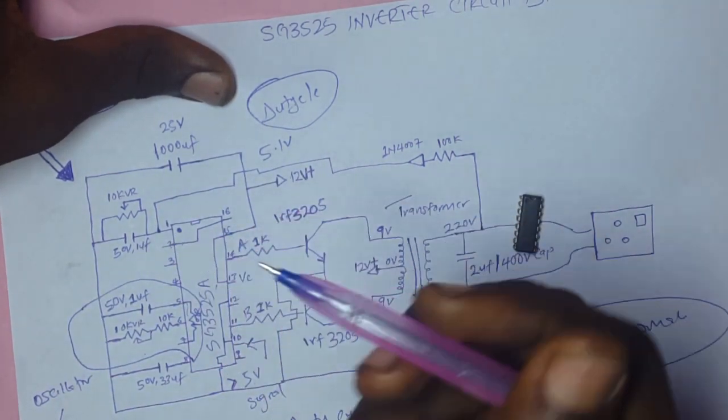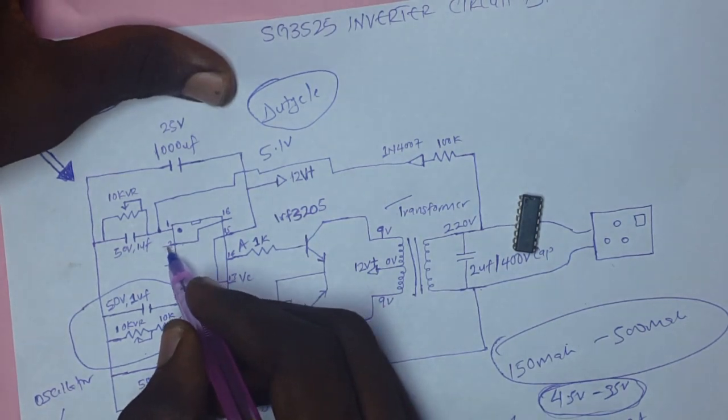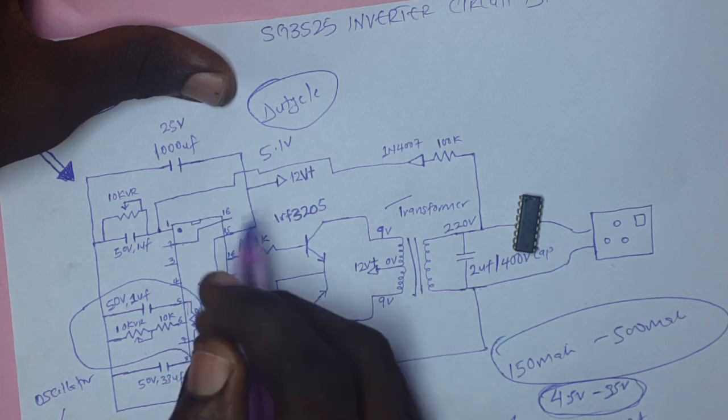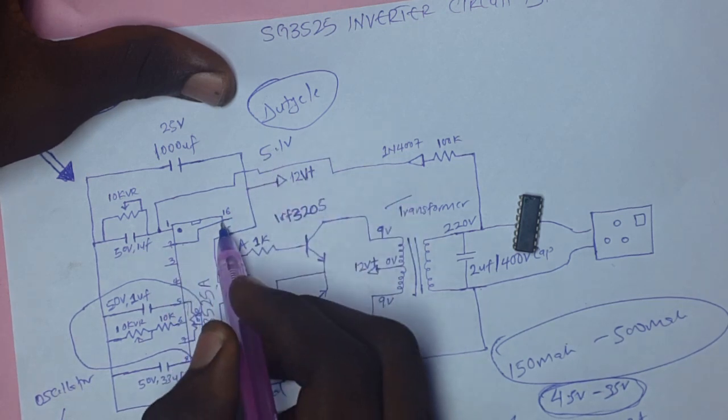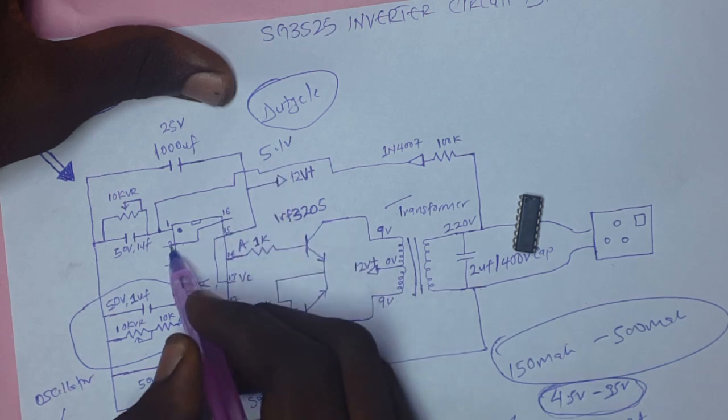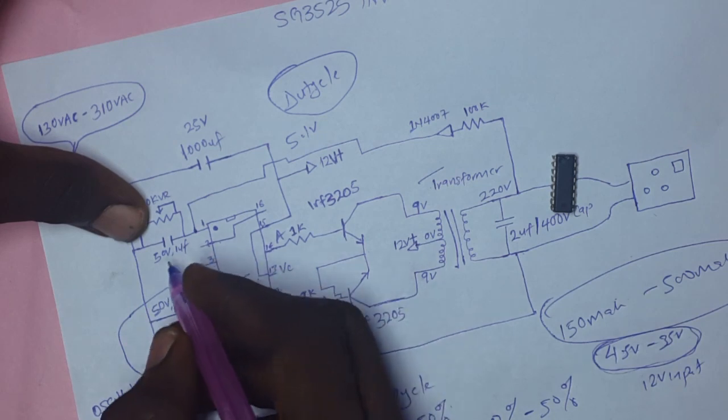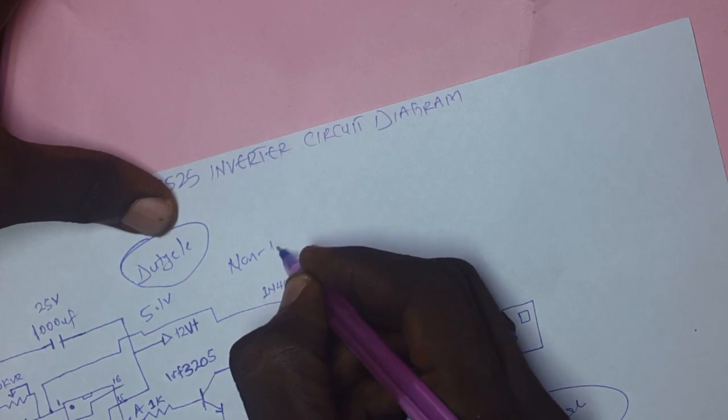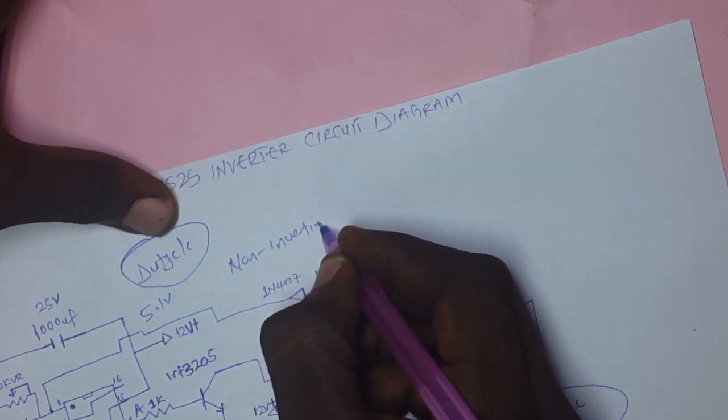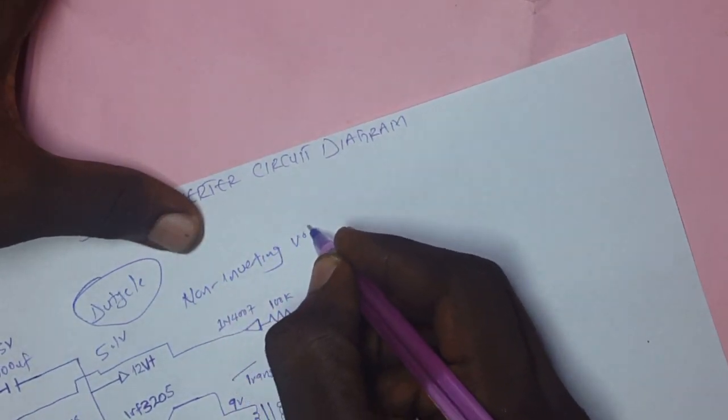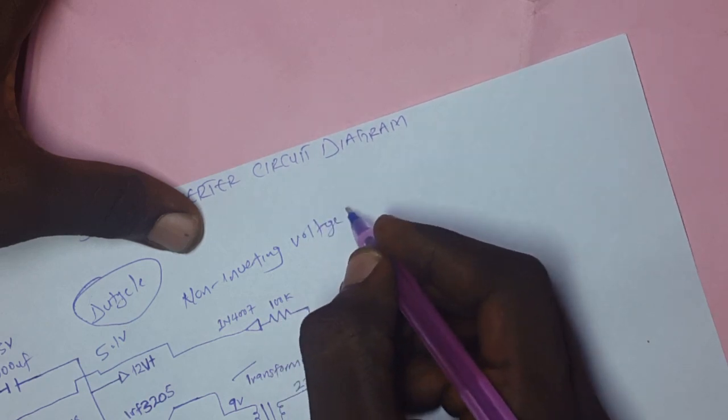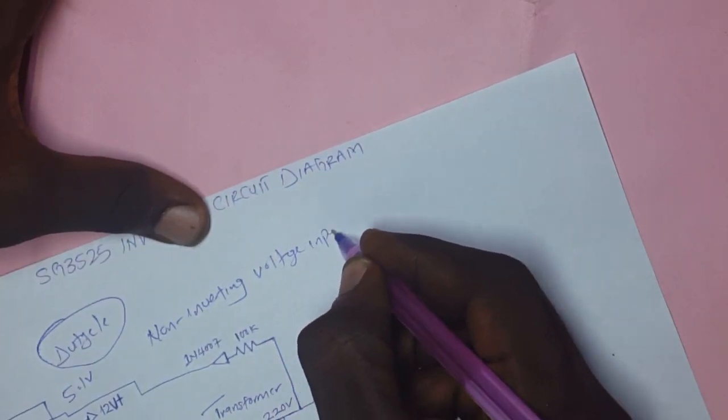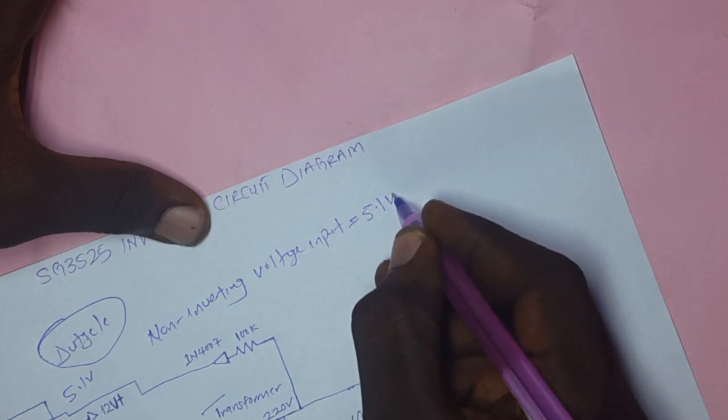Now, we have to create a sample voltage here. Since this IC has an internal reference voltage of 5 volts, we have to connect that 5.1 volts to this. In that case, our non-inverting input voltage is equal to 5.1 volts.